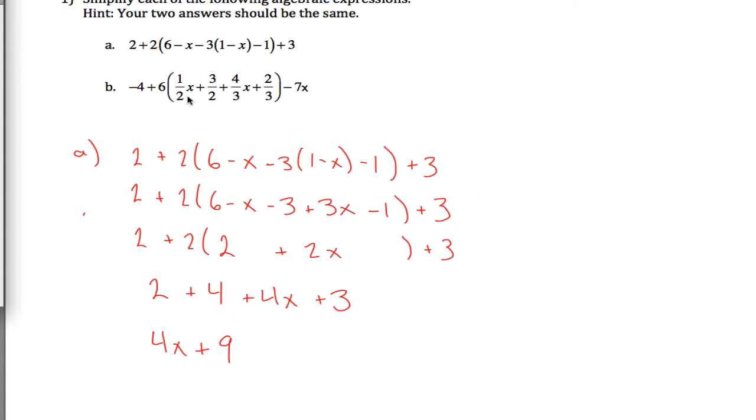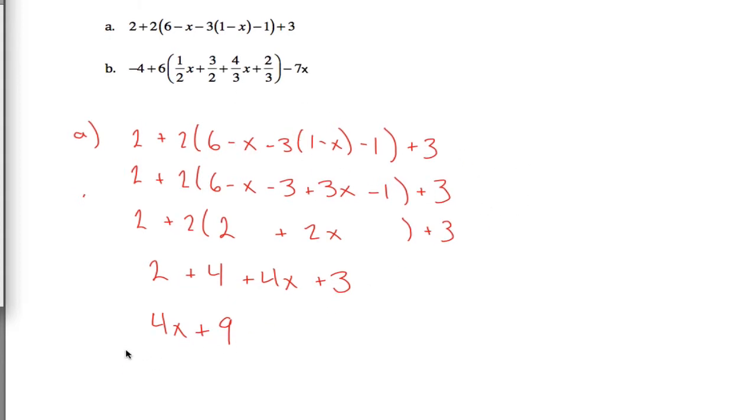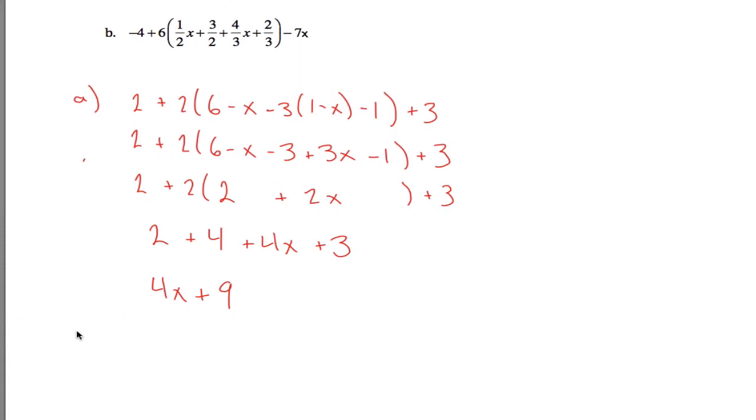All right, and then in part b, I want to do something kind of similar. I want to simplify where we got negative 4 plus 6 times a bunch of fractions. I'm sure people are thrilled to see a bunch of fractions. Let me copy that down right, minus 7x.